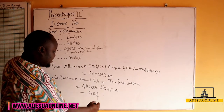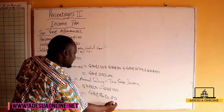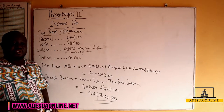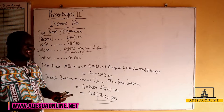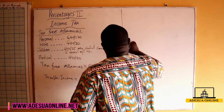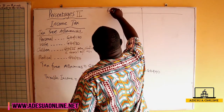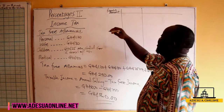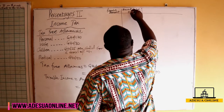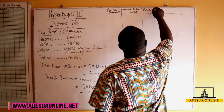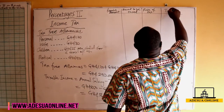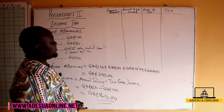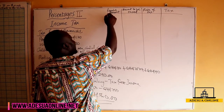When we calculate 850 minus 290, this gives us 560 Ghana. So 560 Ghana is our taxable income — the amount on which we will calculate our tax. Let's go ahead and calculate the tax by drawing a table. The table will have columns for: remaining amount, amount to be taxed, rate of tax, and tax. The remaining amount starts at 560 Ghana.